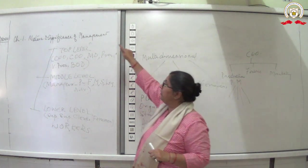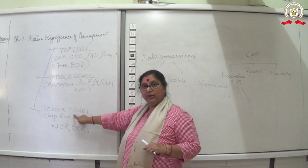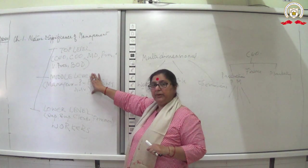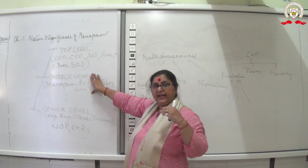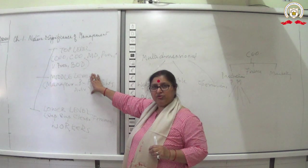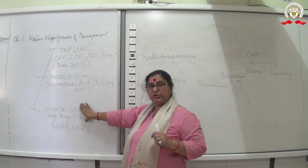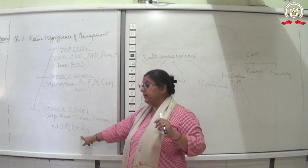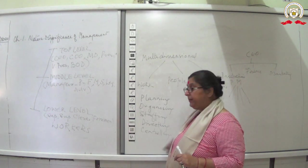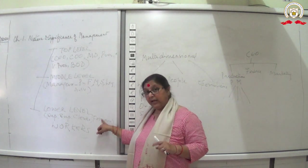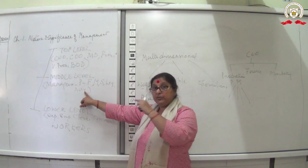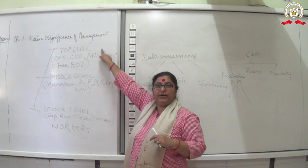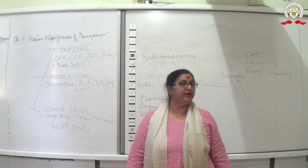For staffing: the top level appoints the middle level, the middle level appoints the lower level, and the lower level appoints workers. For directing: the top level tells middle level the targets and resources; the middle level tells individual department targets. For controlling: the supervisor analyzes work on a daily basis, submits weekly reports to the middle level manager, who then does overall analysis and decision-making.